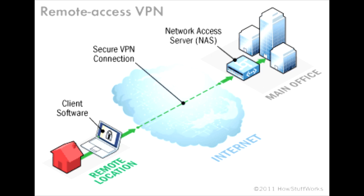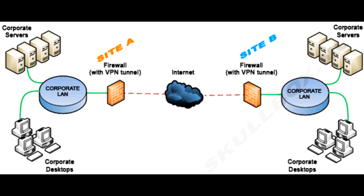A corporate employee while traveling uses a VPN to connect to his or her company's private network and remotely access files and resources on the private network. Home users or private users of VPN primarily use VPN services to bypass regional restrictions on the internet and access blocked websites. Users conscious of internet security also use VPN services to enhance their internet security and privacy.